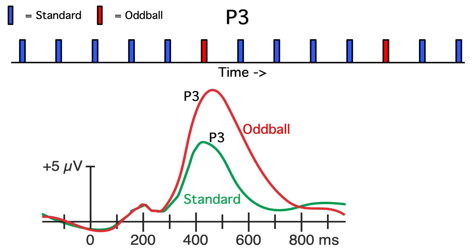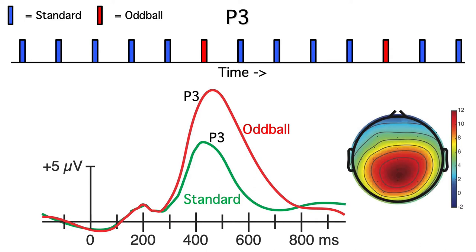In paradigms like this, the oddball generates a much larger P3 than the standard. The P3 is largest near the PZ electrode site, but it can be seen at virtually every electrode site on the top half of the head.